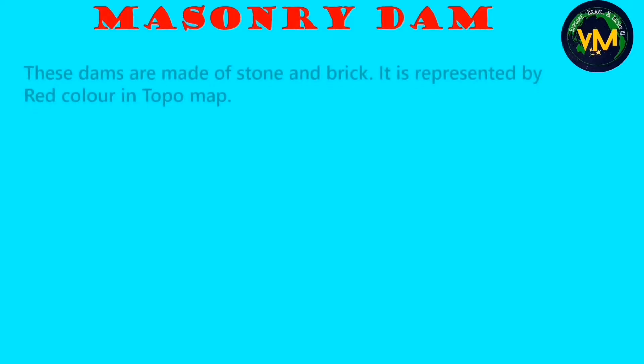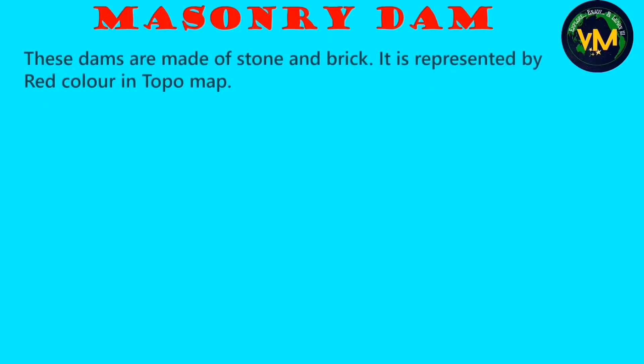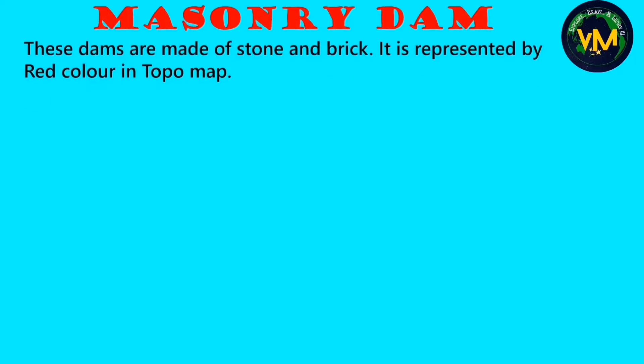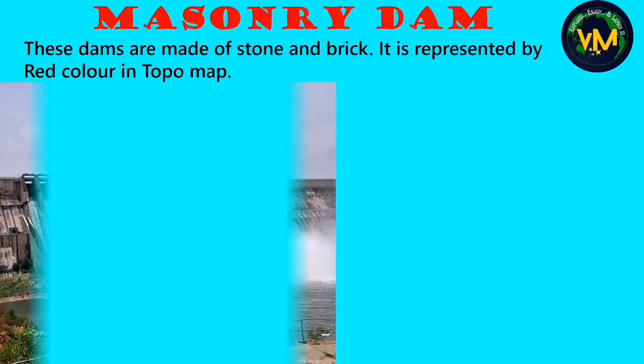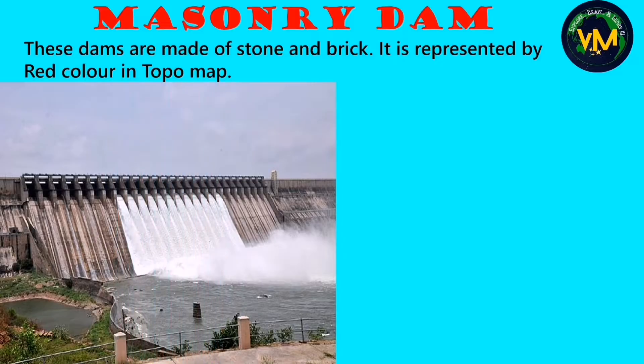Masonry dams are made of stone and brick and they are very strong compared to earthen dams. They are represented by red color in our topographical map. This picture is an example of a masonry dam.